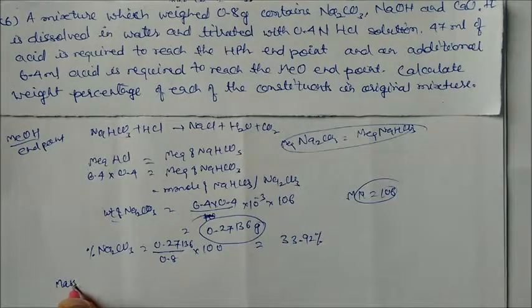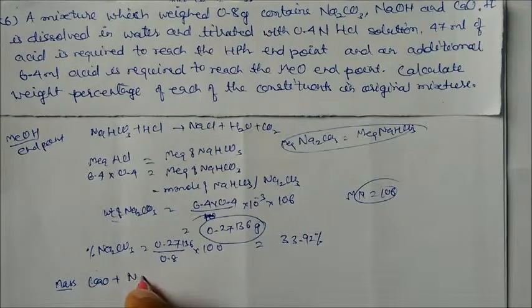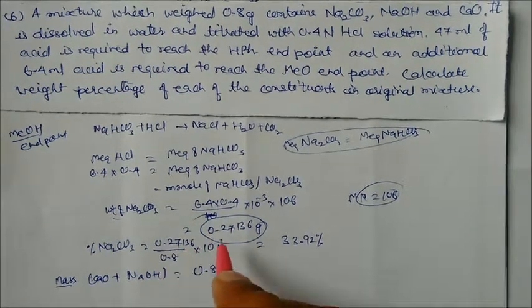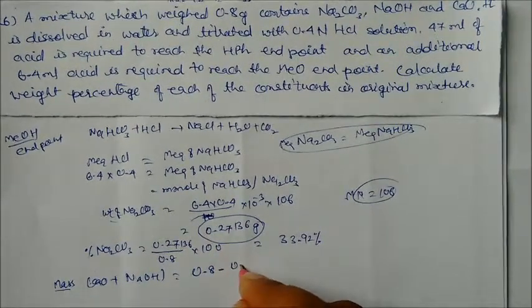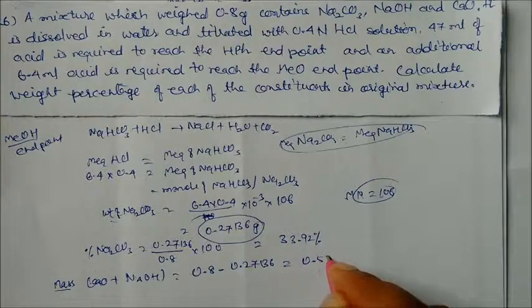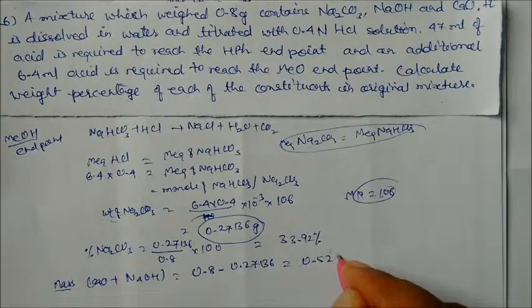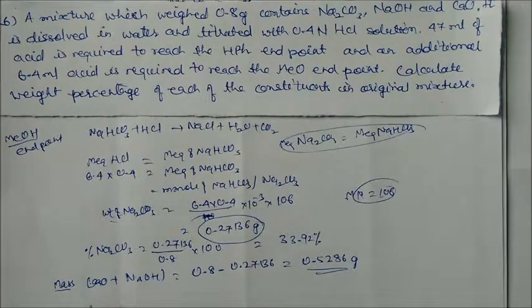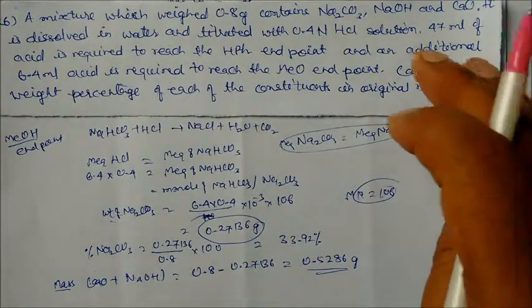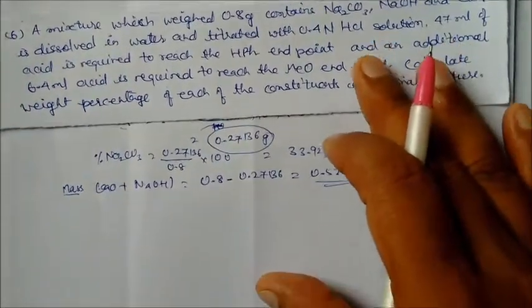Now for the mass of calcium oxide plus sodium hydroxide: total 0.8 g minus weight of sodium carbonate (0.27136 g) gives 0.5286 grams. This is the combined weight of CaO and NaOH. We will take their equivalent weights and equate to find individual values using a variable x.